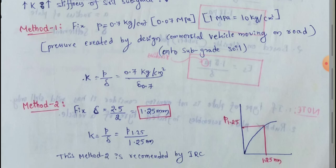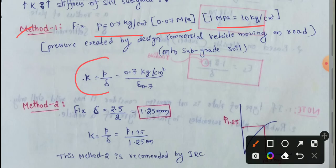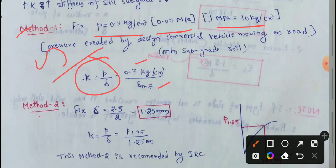Here we have two methods. The first method is fixed pressure: p equals 0.7 kg/cm². Since 1 MPa equals 10 kg/cm², this is 0.07 MPa. So k equals p divided by settlement, where p equals 0.7 kg/cm². This is the revised US method. Method 2 is recommended by IRC — the Indian Road Congress.